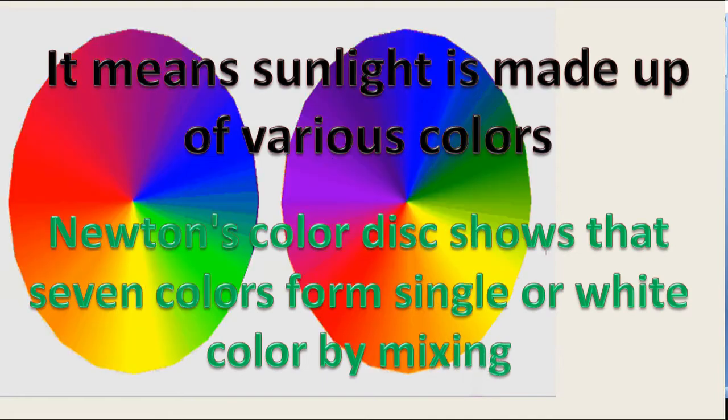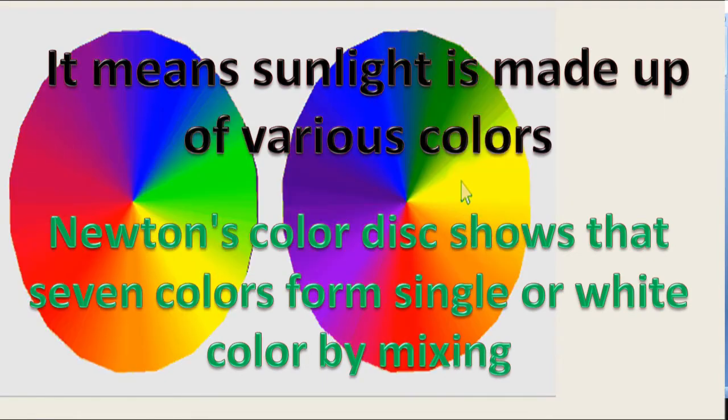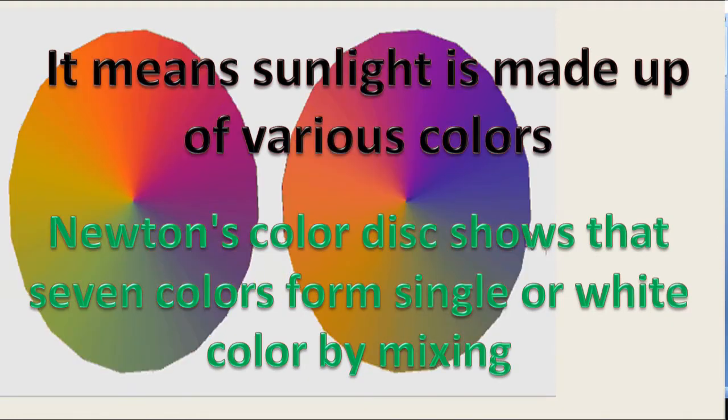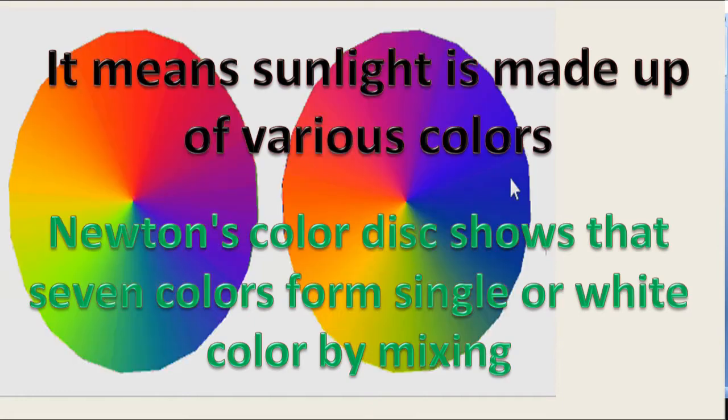Newton's color disc shows that seven colors form a single white color by mixing. Therefore, white light is made up of seven different colors of light.